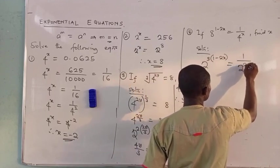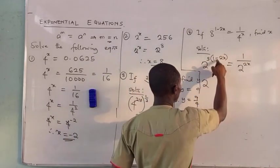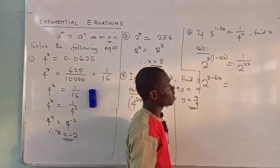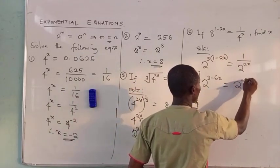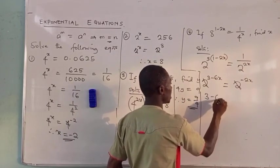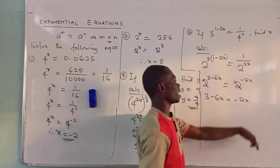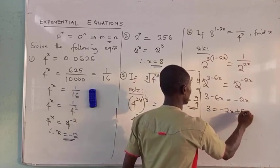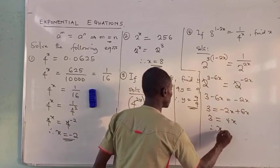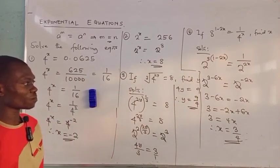Opening the bracket gives 3 minus 6x. The right-hand side: 1 over 2 squared raised to power x, applying the negative index rule gives 2 raised to power minus 2x. Equating the powers: 3 minus 6x equals minus 2x. Rearranging: 3 equals minus 2x plus 6x, so 3 equals 4x, therefore x equals 3 over 4.